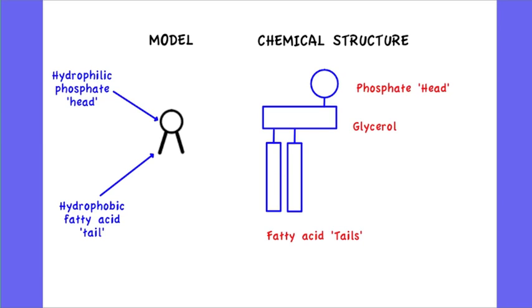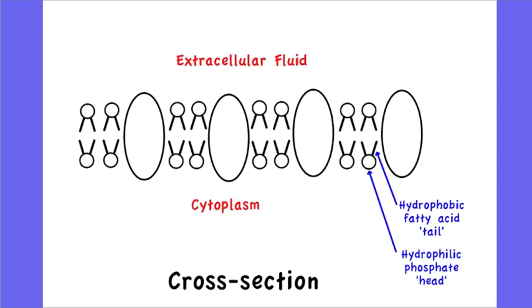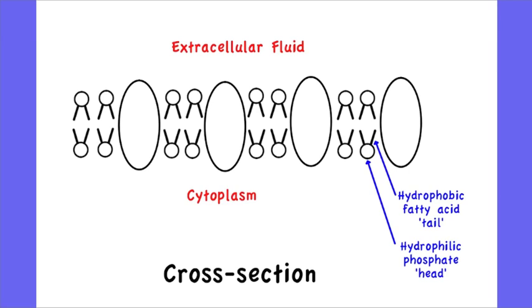So as a result of this structure of the phospholipids, you find that the phospholipids in the cell membrane orientate themselves as a bilayer. The hydrophobic fatty acid tails pointing inward and the hydrophilic phosphate heads pointing outwards, and this forms a water-free zone in the middle right here.